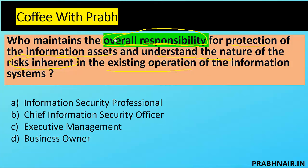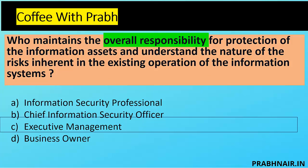The Chief Information Security Officer is ultimately accountable for implementing information security, but the question is about overall responsibility for protection of assets and understanding the nature of risk. The CISO cannot accept risk on his own. Executive management looks very close because ultimately accountable for security lies with them. Business owner is eliminated because he is specific to his own business, but the question is talking about overall responsibility. That's why the answer is C, executive management. If C is not there, the second best option is the CISO.